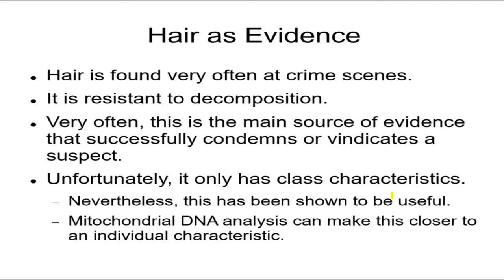Let's look at hair first. Hair is often found because people just have hair. So they do the crime, hair can fall out, and you might see it. That'll hopefully give a connection between a suspect and a crime scene. The good thing about it is that it's resistant to decomposition — it lasts a long time. Also, this might actually be the main source of evidence. There are cases where it's only because of a hair that we're able to connect a suspect to a crime.